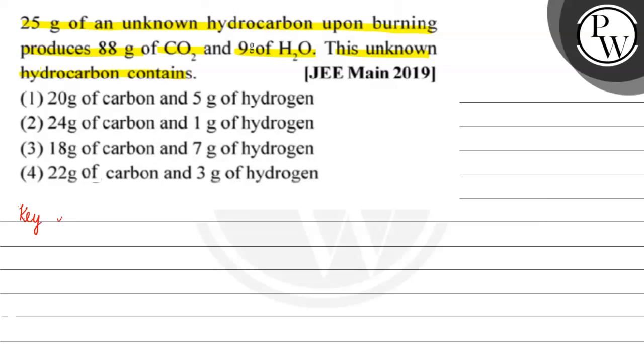The key concept for this question is: suppose we have a hydrocarbon that we burn, the reaction that happens is CxHy reacts with x plus y by 4 moles of oxygen, and we have formation of x moles of carbon dioxide and y by 2 moles of water. If we see this, 1 mole of CxHy produces x moles of carbon dioxide.